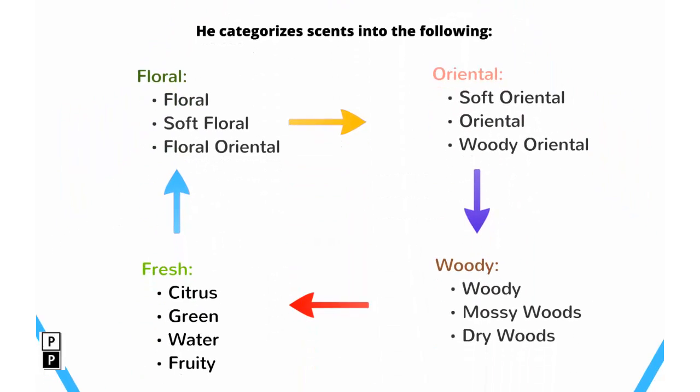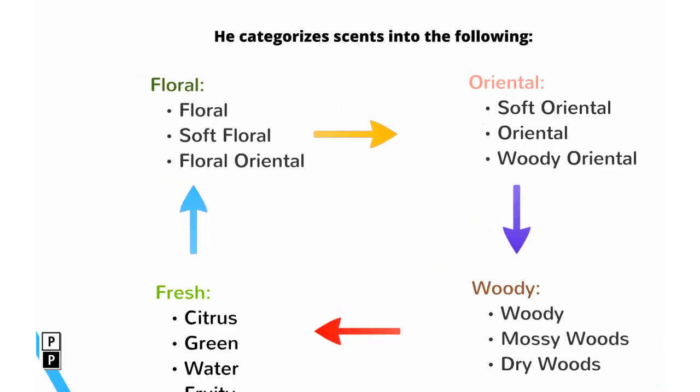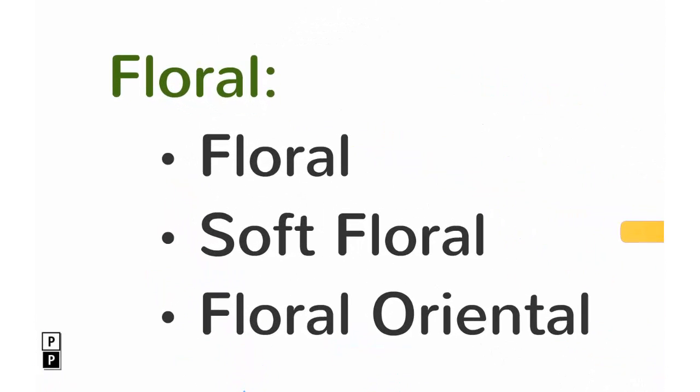He categorises scents into the following four main groups: floral, oriental, woody, and fresh. Floral scents, as the name suggests, are based off the scents produced by fresh-cut flowers. They also include characteristics such as powdery notes for soft florals, and orange blossom and sweet spices for floral orientals.